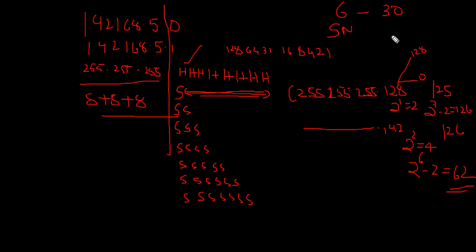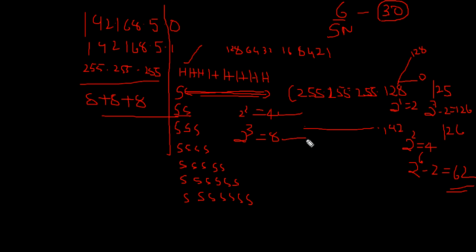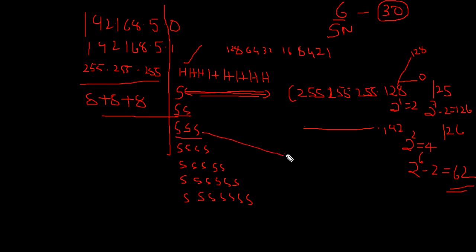So what is our requirement? I want 6 subnets, and each subnet should handle 30 hosts. If I take 2 bits: 2 raised to power 2 equals 4 — not enough. If I take 3 bits: 2 raised to power 3 equals 8 subnets — that works. With 3 bits for subnet, 5 bits remain for host: 2 raised to power 5 minus 2 equals 30. That meets my requirement. The mask value is 224, so the full mask is 255.255.255.224.